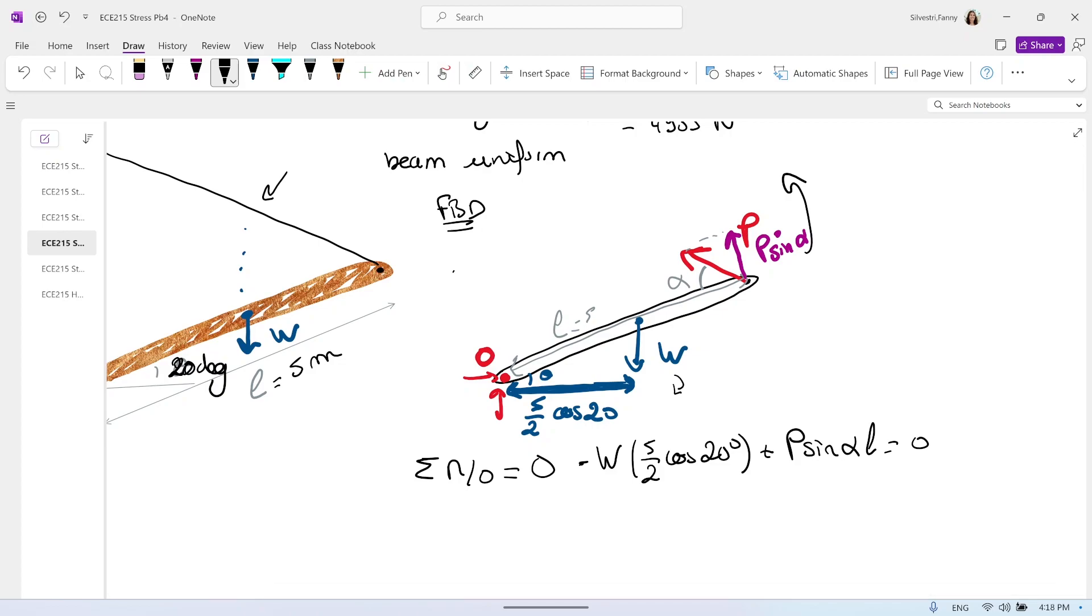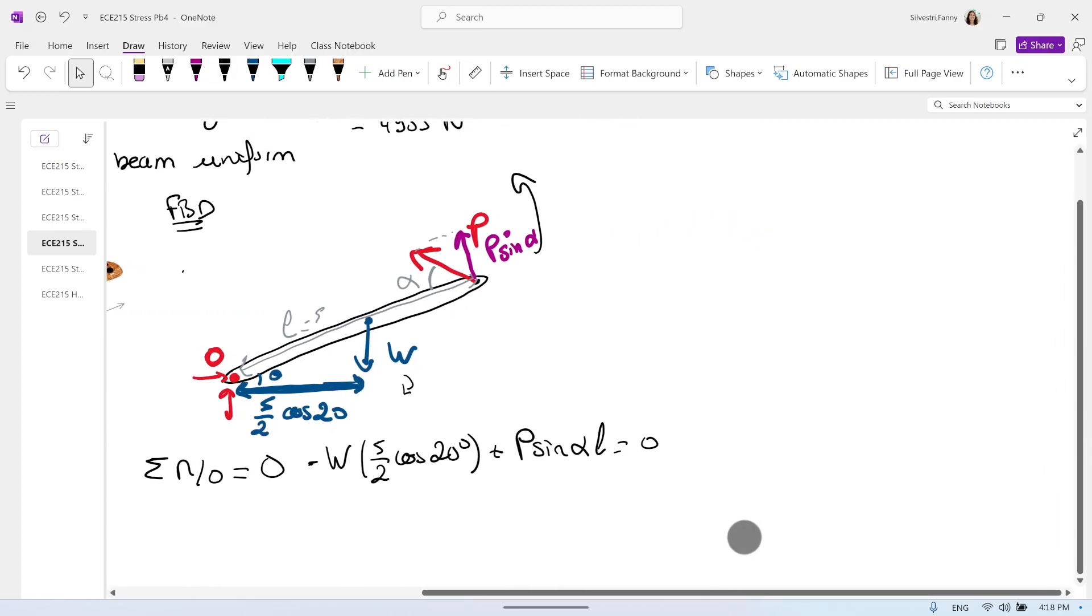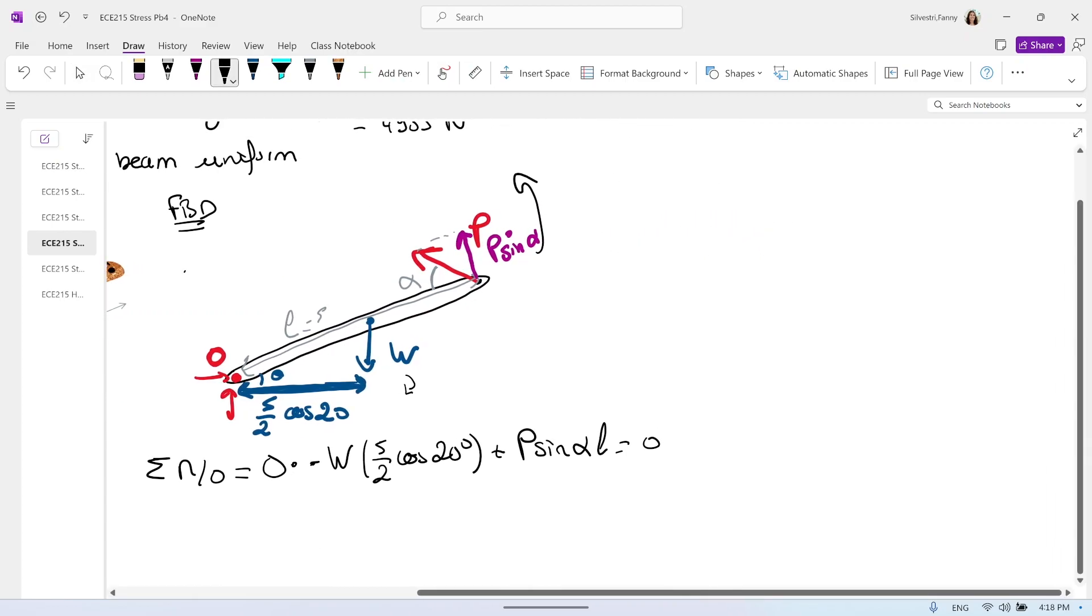So let's find alpha before we can solve for this equation. So I want to find this angle alpha. We are missing one distance there. That is 2. So to find angle alpha, we would love to do a sine law.